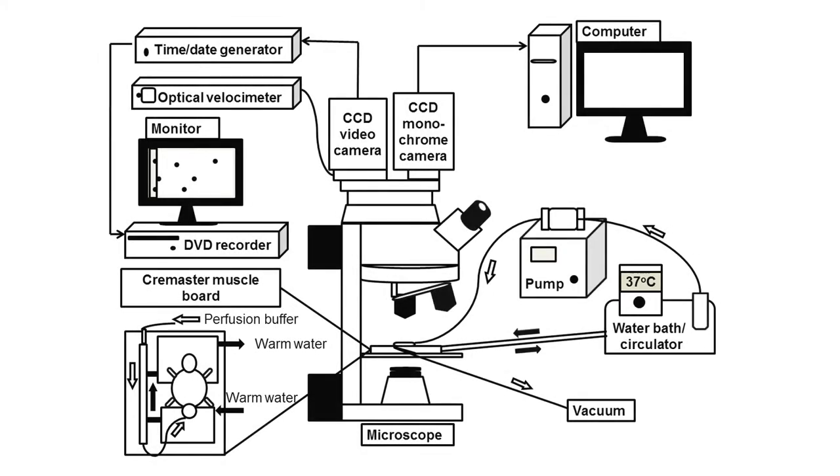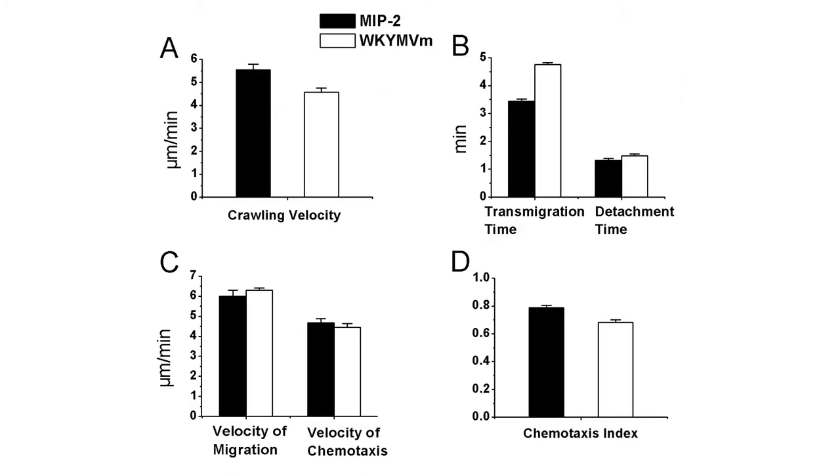In this experiment, we demonstrated the procedures of how to use brightfield intravital microscopy to visualize and determine the neutrophil intraluminal crawling, transendothelial migration, and migration in chemotaxis in response to neutrophil chemoattractant in vivo. We used either MIP2, CXCL2, or synthetic peptide WKYMVM prepared in agarose gel to induce neutrophil recruitment in mouse cremaster muscle tissue. As we can see from this figure, MIP2 at 0.5 micromolar and WKYMVM at 0.1 millimolar elicited neutrophil intraluminal crawling at similar velocities. The neutrophil transendothelial migration and the detachment from the venule were comparable in the length of time. These two chemoattractants also induced neutrophil migration and chemotaxis in muscle tissue at nearly the same velocity and with similar neutrophil chemotaxis indexes.